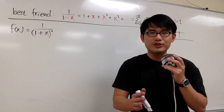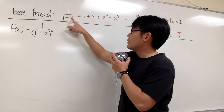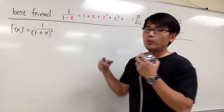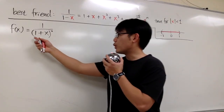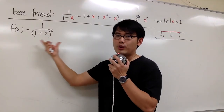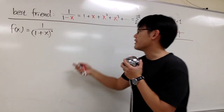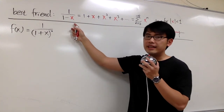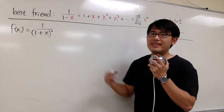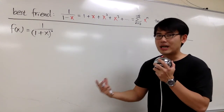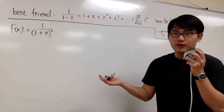Differentiation or integration — but if you integrate 1 over 1 minus x, you end up with ln of something, and that's not what we want because we don't have any ln here at all. The key is we will differentiate a version of our best friend and then come up with this function. What's the version?